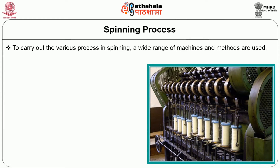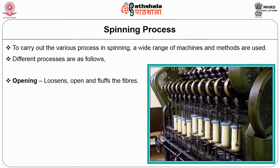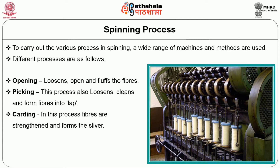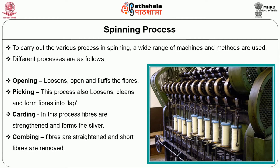To carry out the various processes in spinning, a wide range of machines and methods are used. The different processes are as follows. First is opening — it loosens, opens and fluffs the fibers. Picking — this process also loosens, cleans and forms the fibers into lap. Next is carding — in this process fibers are strengthened and form the sliver. In combing, fibers are straightened and short fibers are removed.